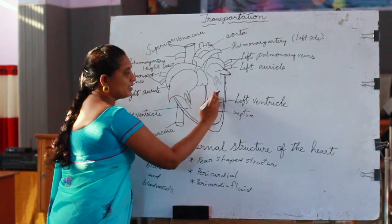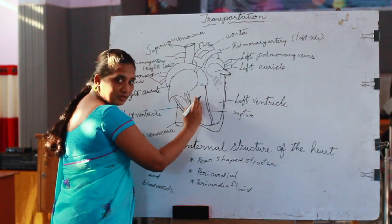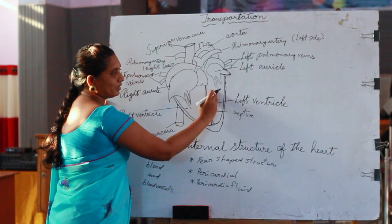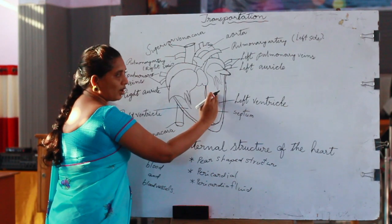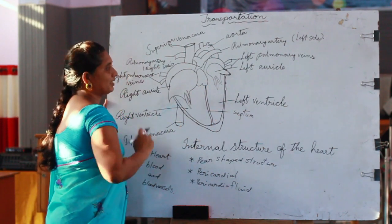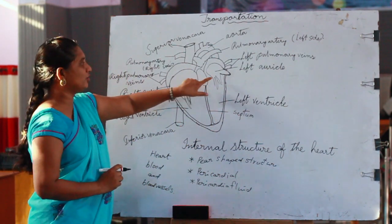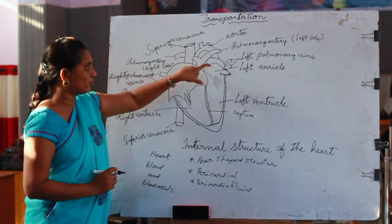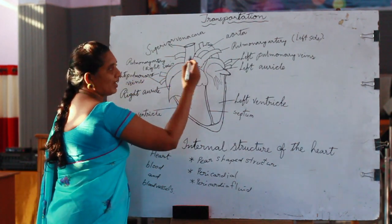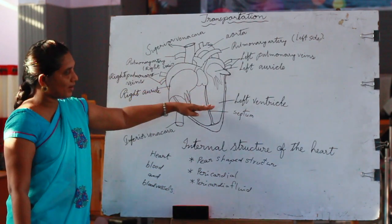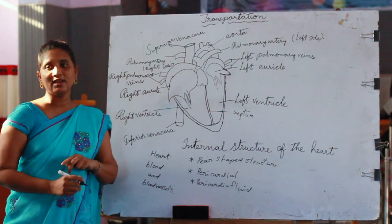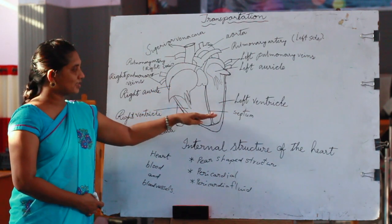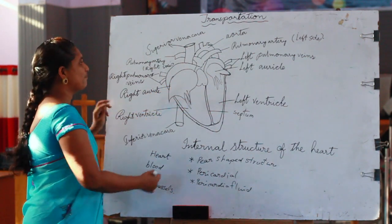The left side is smaller compared to the right side. Our heart is divided into four chambers or four rooms. The upper parts are known as atria whereas the lower parts are known as ventricles.